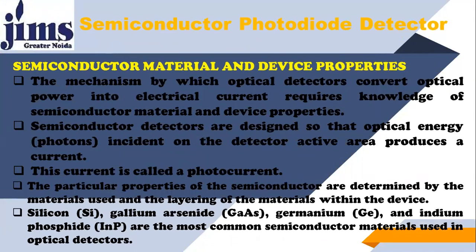Now, regarding semiconductor material and device properties: the mechanism by which optical detectors convert optical power into electrical current requires knowledge of semiconductor material and device properties. When making a photodiode that acts as an optical detector, it must be manufactured from special semiconductor materials that have the property of giving free electrons after absorption of photons. We have very special types of semiconductors for this particular conversion.